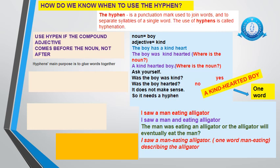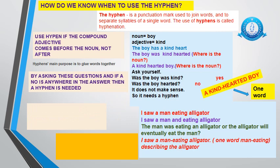Another way to find out whether you need a hyphen is by asking questions. If there is a no anywhere, then a hyphen is needed. Was the boy kind? Yes. Was the boy hearted? No — it doesn't make sense. So when you get a no, you need a hyphen in the middle of those two words. A kind-hearted boy — kind-hearted is one word. Although it's two words in front of you, once that hyphen is in the middle it counts as one word, one idea, one adjective, one description for that noun — boy.